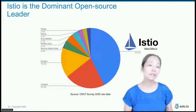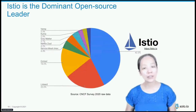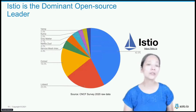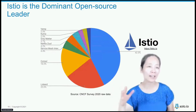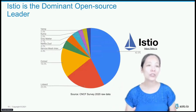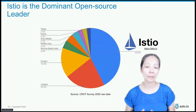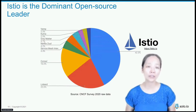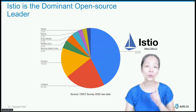According to the CNCF data survey last year, Istio is approximately 45% — the most dominant service mesh in production toward the end of 2020.